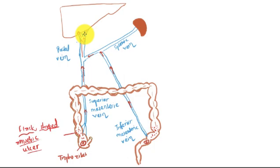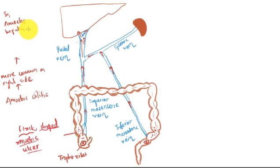If there is amoebic colitis on the right side of the colon, there will be amoebic hepatitis or abscess on the right side of the liver. If there is amoebic colitis on the left side of the colon, there will be amoebic hepatitis or abscess on the left side of the liver. What usually happens is the amoebic colitis is more common on the right side, thus resulting in more amoebic hepatitis and abscess on the right lobe of the liver.